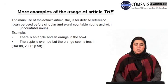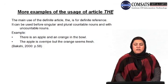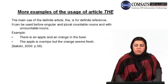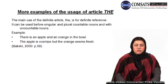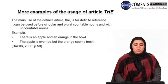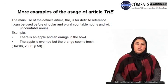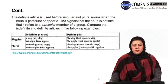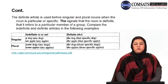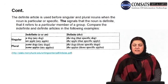Look at the examples. There is an apple and an orange in the bowl — the bowl is some specific bowl, so 'the' is used. The specific apple is overripe but the orange seems fresh. An orange turns into 'the orange' because you are referring to it again — it becomes specific. The definite article is used before singular and plural nouns when the noun is particular or specific. 'The' signals that the noun is definite, referring to a particular member of a group.